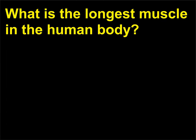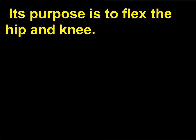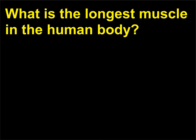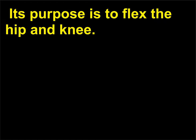What is the longest muscle in the human body? The longest muscle is the sartorius, which runs from the waist to the knee. Its purpose is to flex the hip and knee.